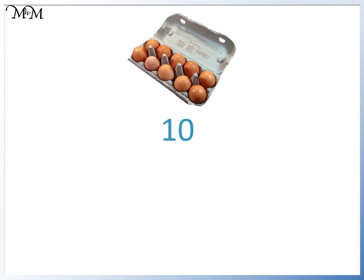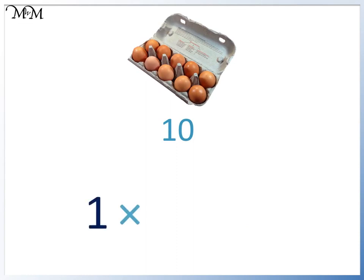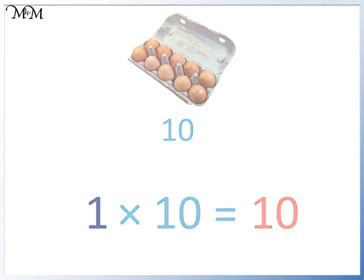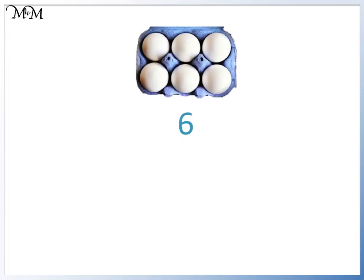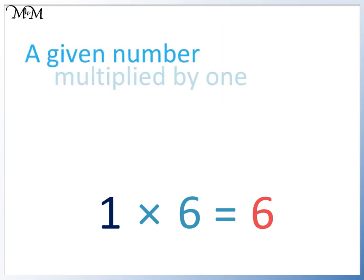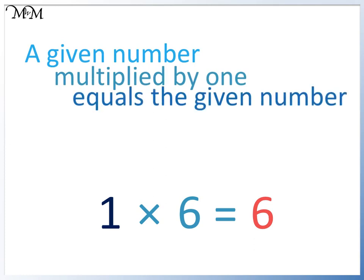Here is a box of 10 eggs. We only have one box. We have one lot of 10, which equals 10. 1 times 10 equals 10. Here is a box of 6 eggs. We have one box — one lot of 6, which equals 6 eggs in total. We can see that a given number multiplied by 1 equals the given number. 1 times 6 equals 6.